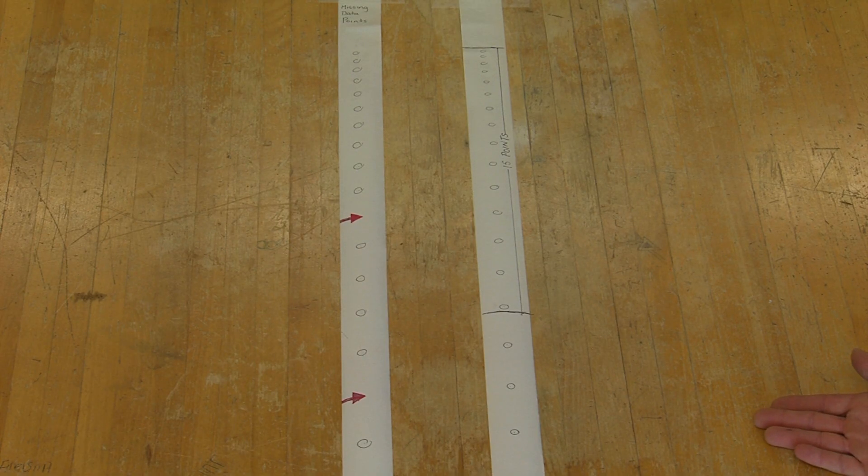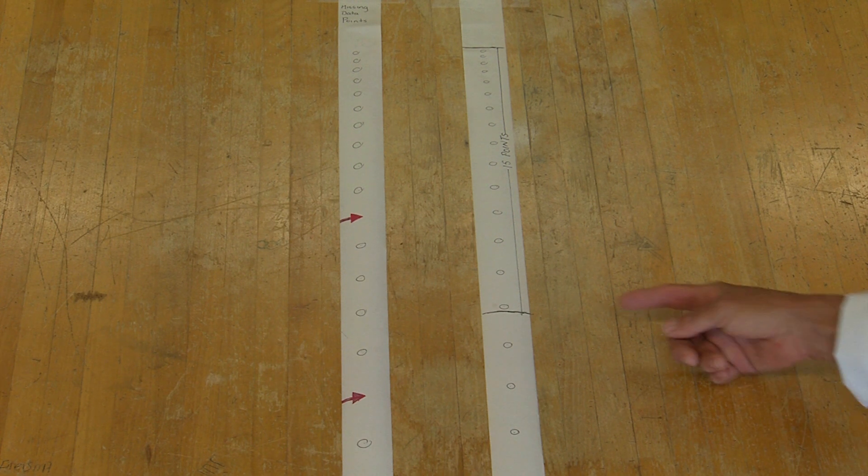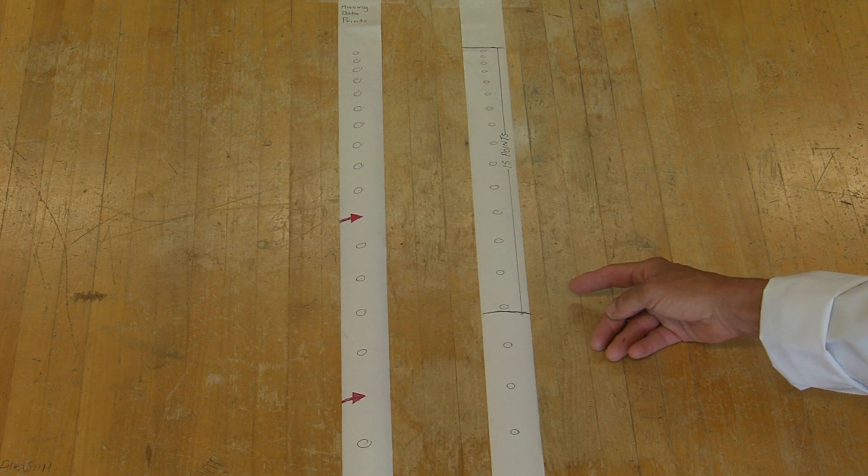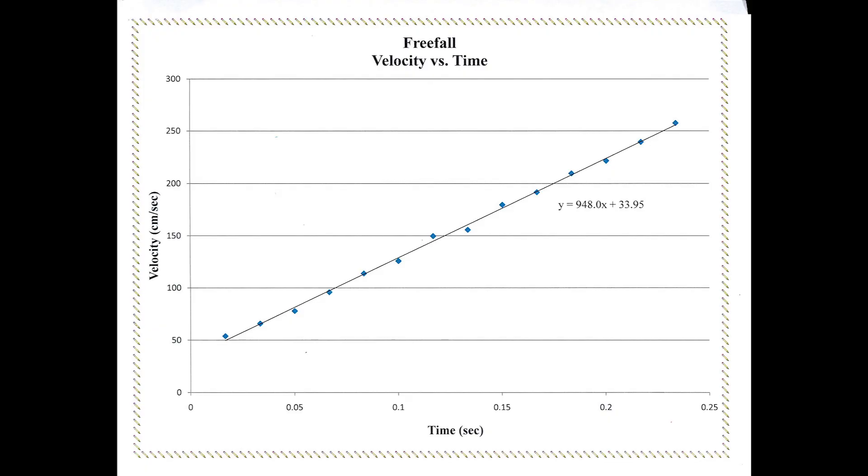Then, we will calculate the average velocity between 15 successive positions by measuring the distance between the points and dividing by the elapsed time, which we've already established is 1/60th of a second. Finally, we will graph the object's velocity versus elapsed time. The slope of this graph will give us the value of the object's acceleration.